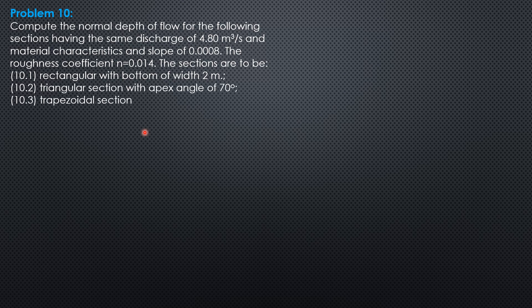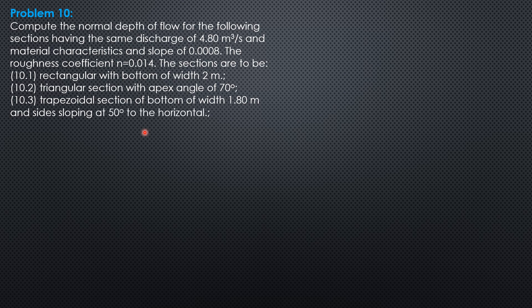The sections are to be rectangular with bottom of width 2 meters, triangular section with apex angle of 70 degrees, trapezoidal section of bottom of width 1.8 meters, and side sloping at 50 degrees to the horizontal.